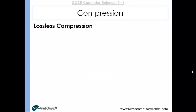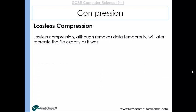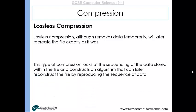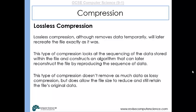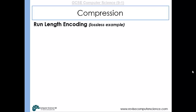Lossless compression, although it removes data temporarily, will later recreate the file exactly as it was. This type of compression looks at sequences of data stored within the file and constructs an algorithm that can later reconstruct the file by reproducing the same sequence of data. It doesn't remove as much data as lossy compression, but does allow the file to reduce in size while still retaining the original data, which can then be recreated and rebuilt later on.